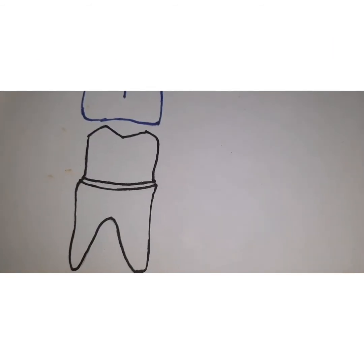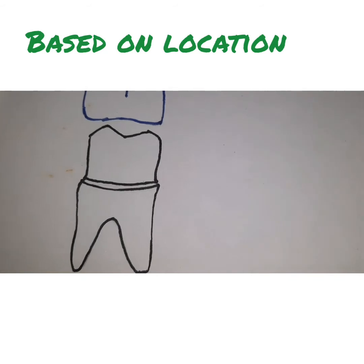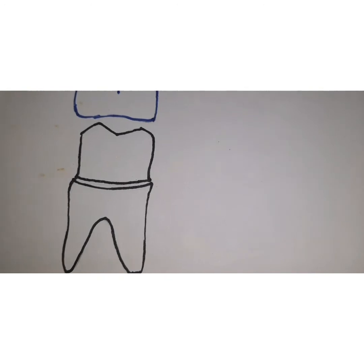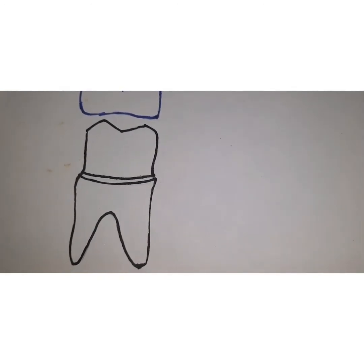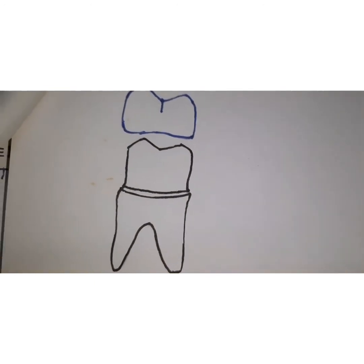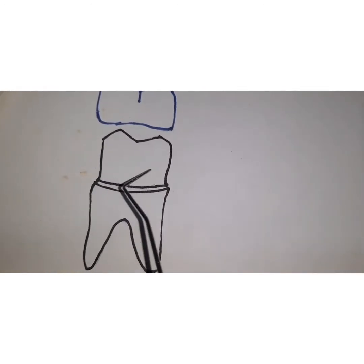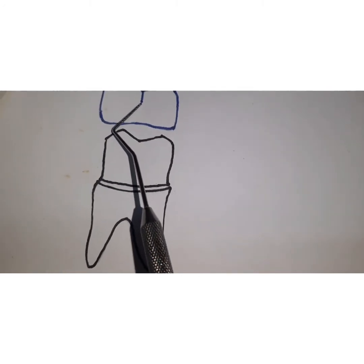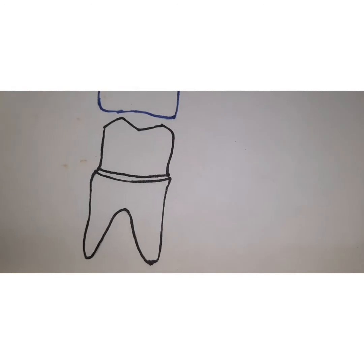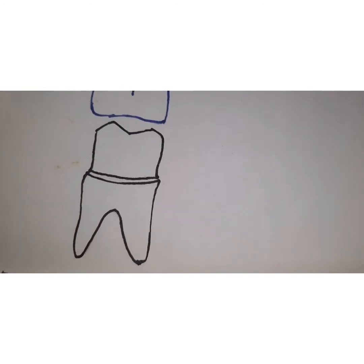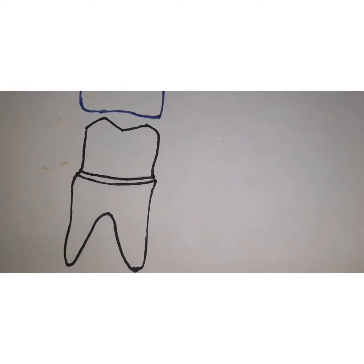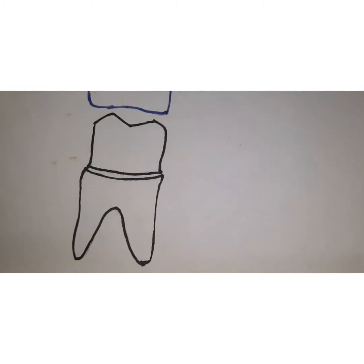On the basis of location you have three types of retainers. First is the extracoronal retainer, which basically encircles all or the remaining part of the tooth structure. It can be in the form of a crown where the entire surface is prepared and over that you bond the restorative material — it could be a partial veneer or a full veneer crown.